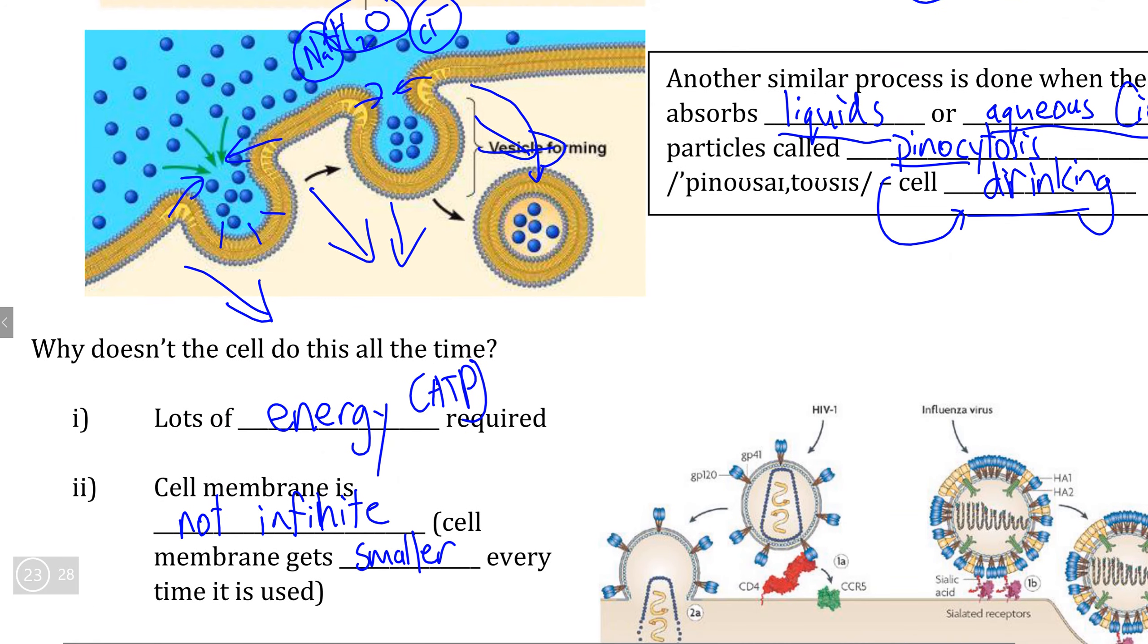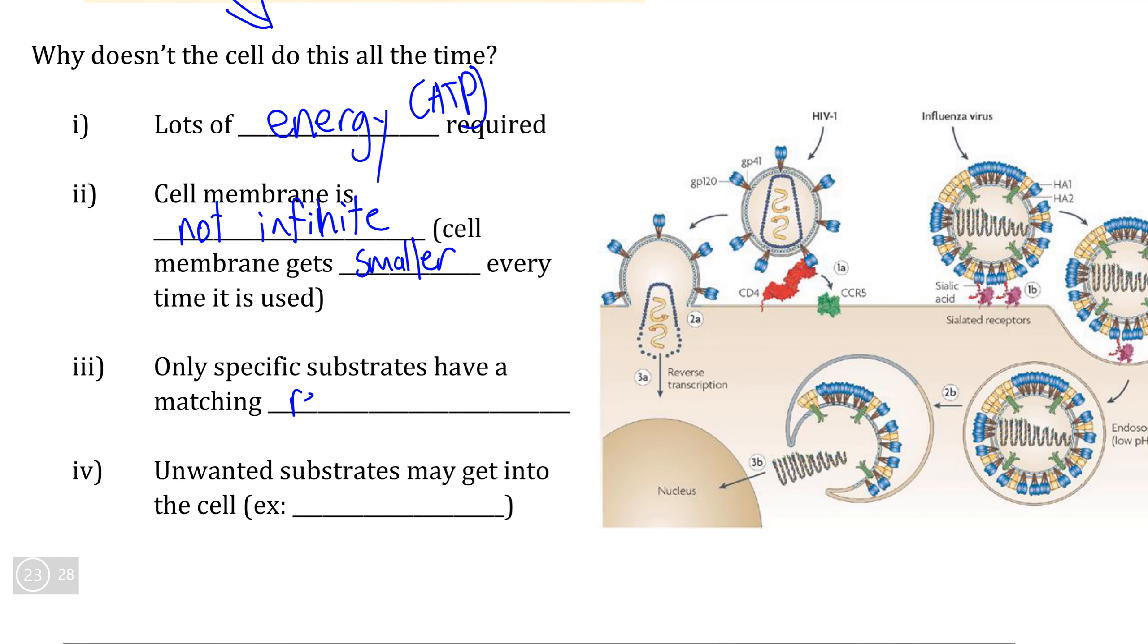Thirdly, because this process is triggered by a specific receptor protein, not every substrate is able to trigger the process of phagocytosis based on whether there may or may not be a receptor protein that matches the given substrate. And the opposite problem actually exists as well.